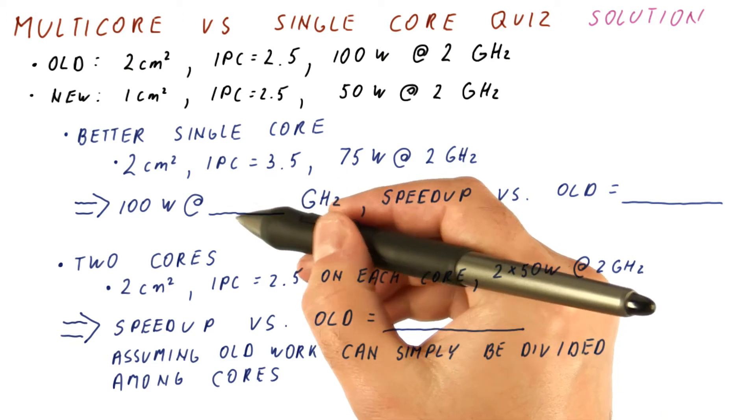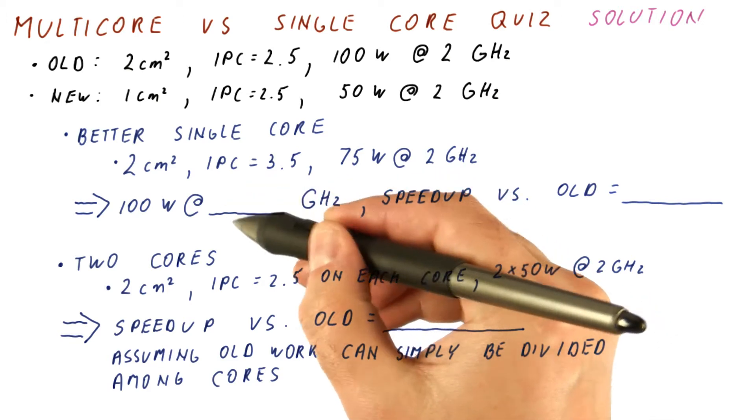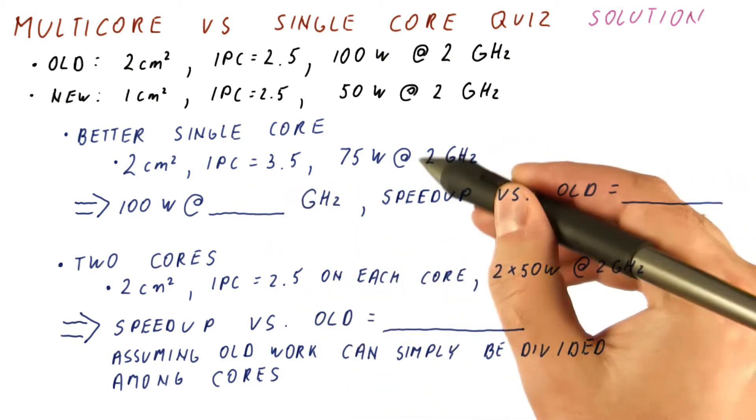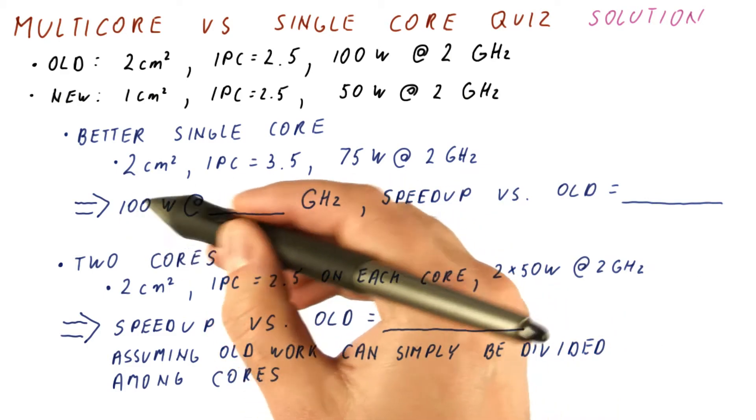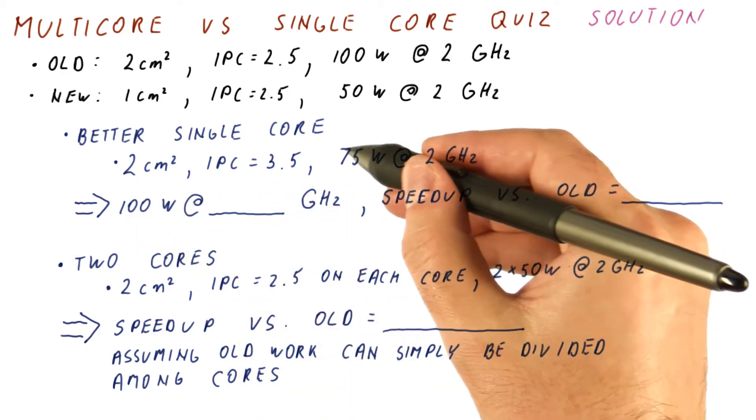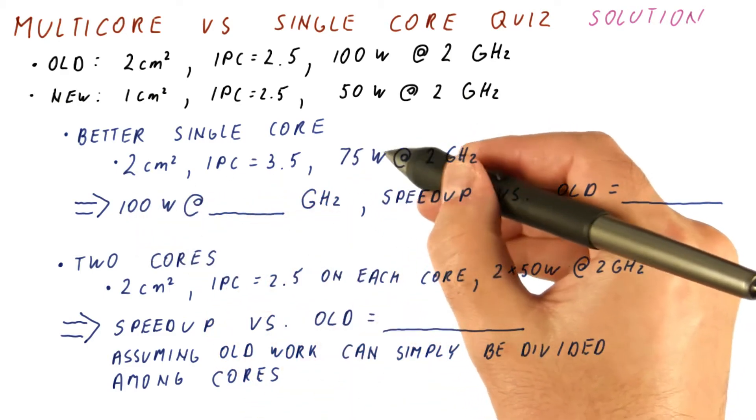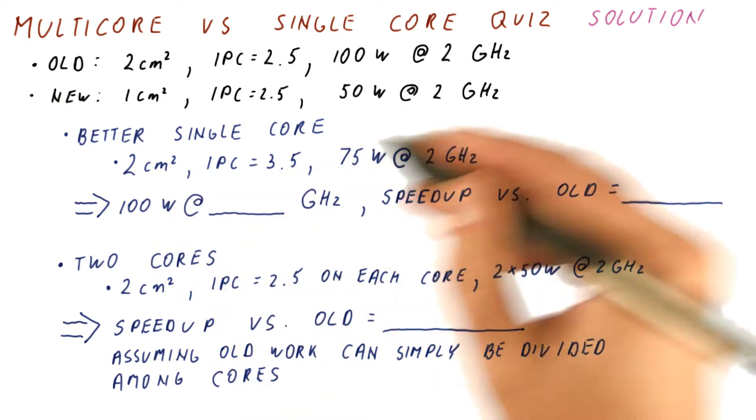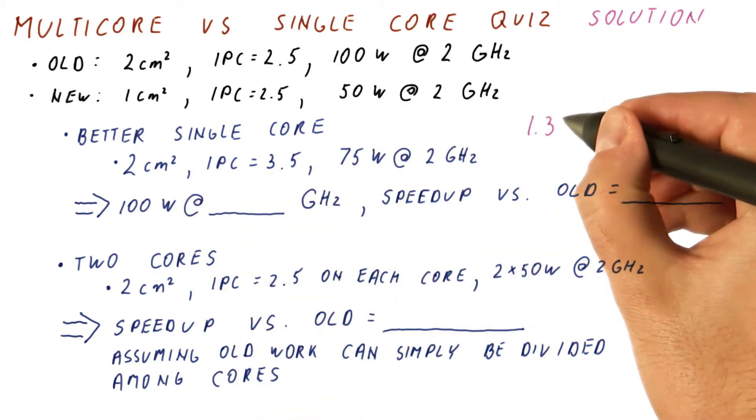The first thing we need to figure out here is how much can we raise this frequency so that we get to 100 watts? Well, we are allowed to increase the power from 75 watts to 100 watts. That's a factor of 1.33.